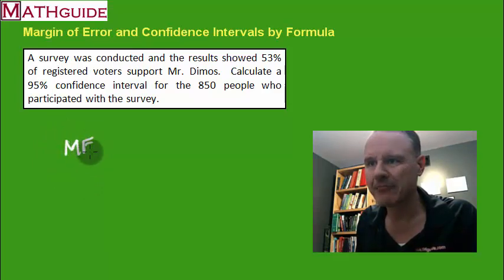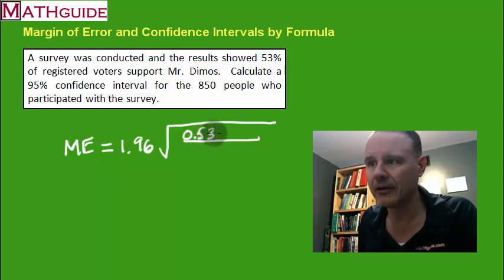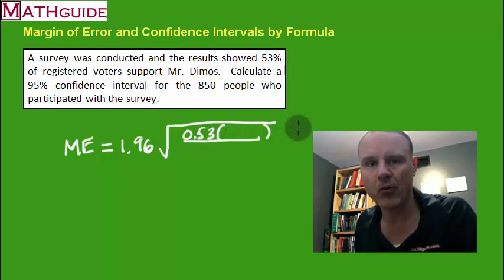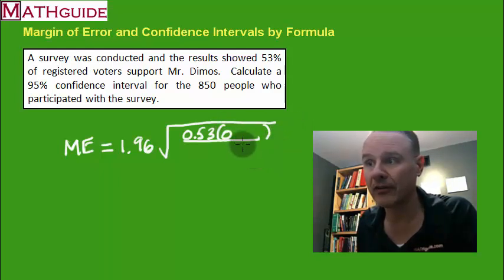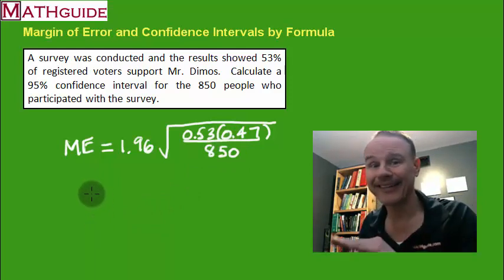If you remember, we had this formula that gave us the margin of error. This is what the formula looks like for a 95 percent confidence interval. Disregard the 95 percent, we already know that's the percentage for our confidence interval. The other percent is 53 percent, so when you throw it into the formula you're going to put 0.53 and in parentheses you're going to put one minus 0.53. I'm just going to make it easier - I know what one minus 0.53 is, it's 0.47. And underneath, how many people? We got 850 people.